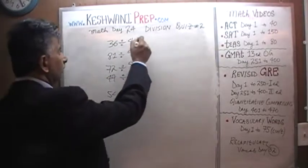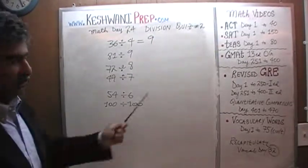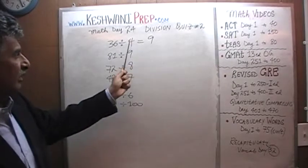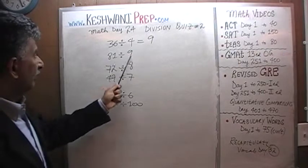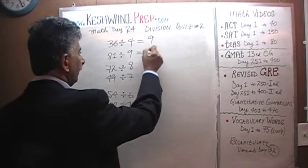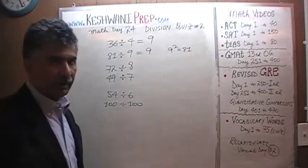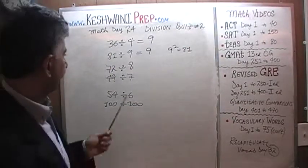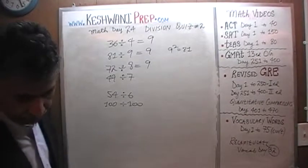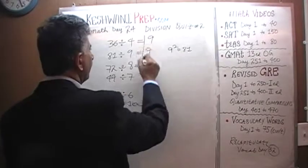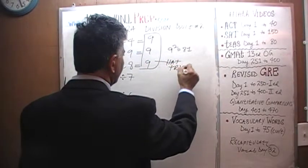36 divided by 4 is 9, because 9 fours are 36. How do we know? Because 10 fours are going to be 40, and 36 is 4 less than 40. 81 divided by 9 is also 9, because 9 squared is 81. 72 divided by 8 is also going to be 9. We have a hat-trick here.